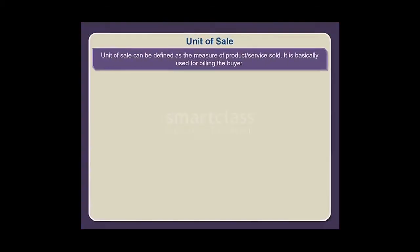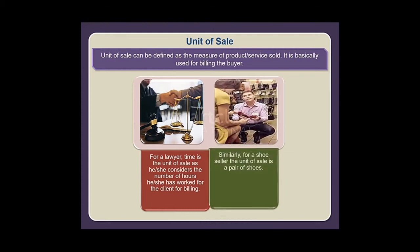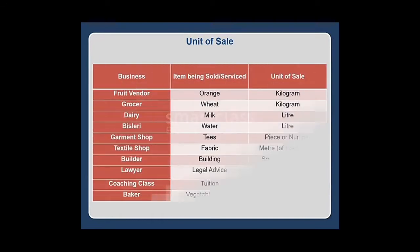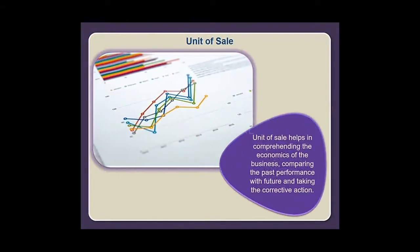Unit of sale can be defined as the measure of product or service sold. It is basically used for billing the buyer. For example, for a lawyer, time is the unit of sale, as he or she considers the number of hours worked for the client for billing. Similarly, for a shoe seller, the unit of sale is a pair of shoes. Unit of sale helps in comprehending the economics of the business, comparing past performance with future, and taking corrective action.